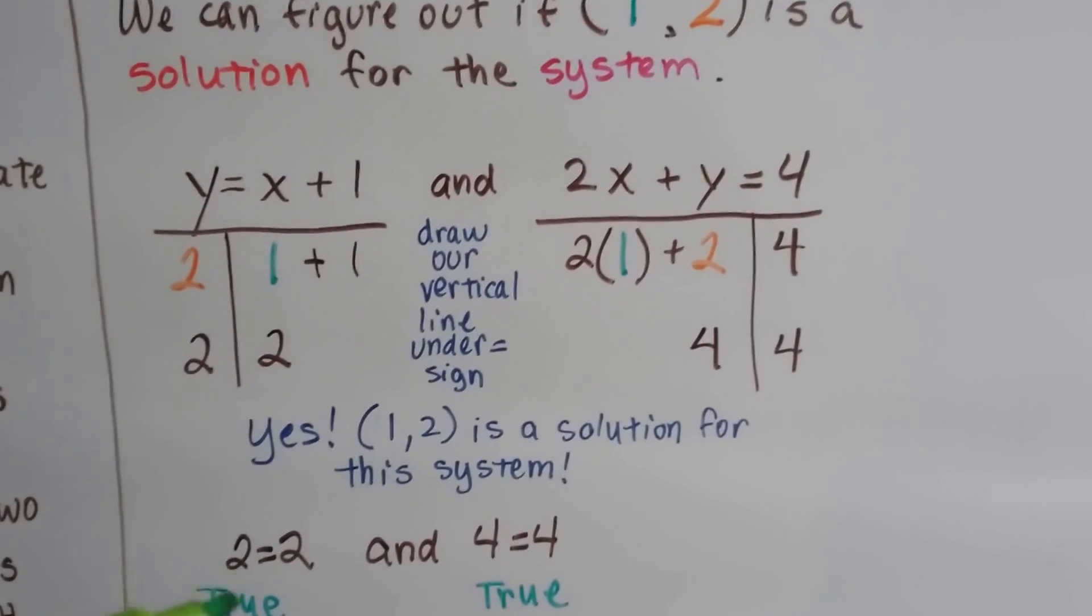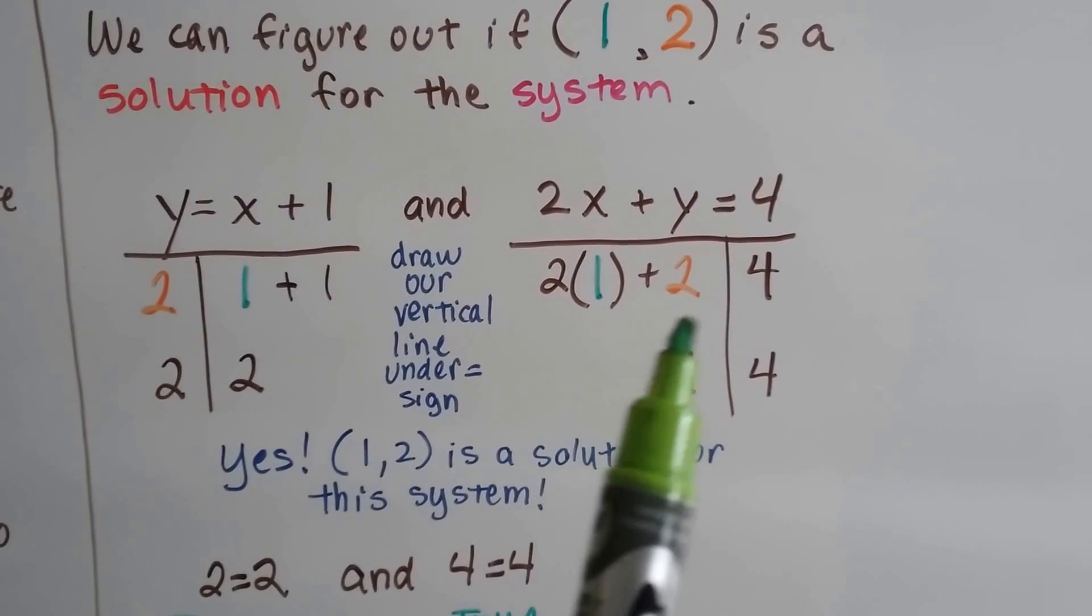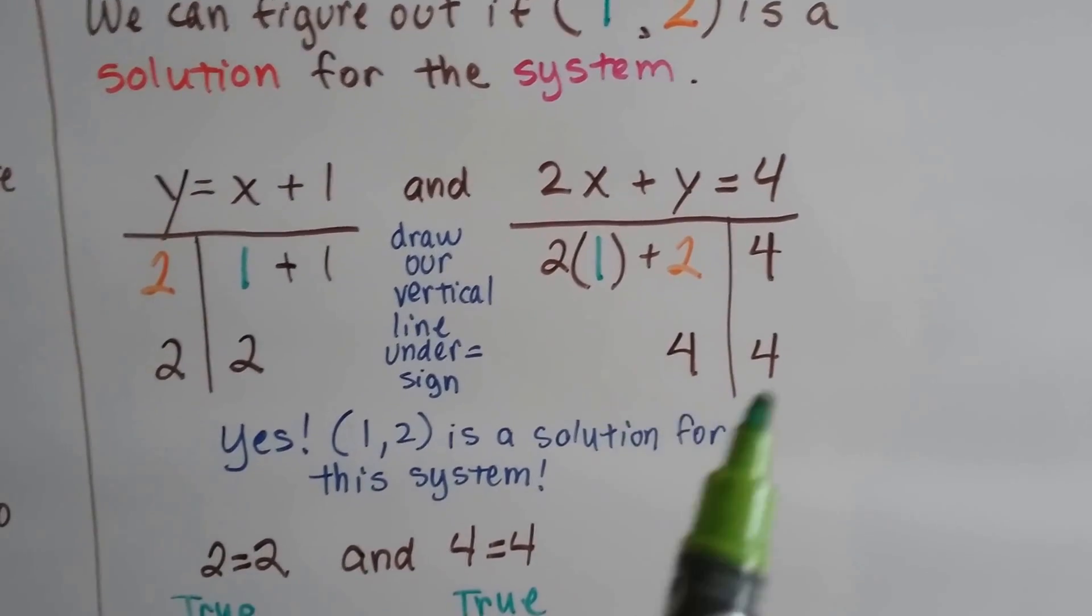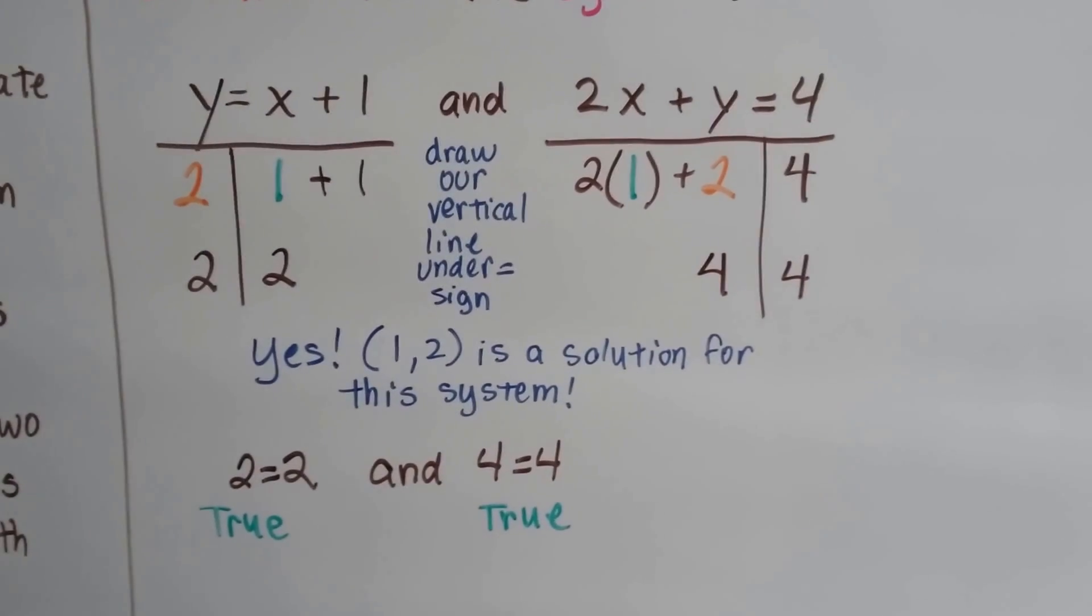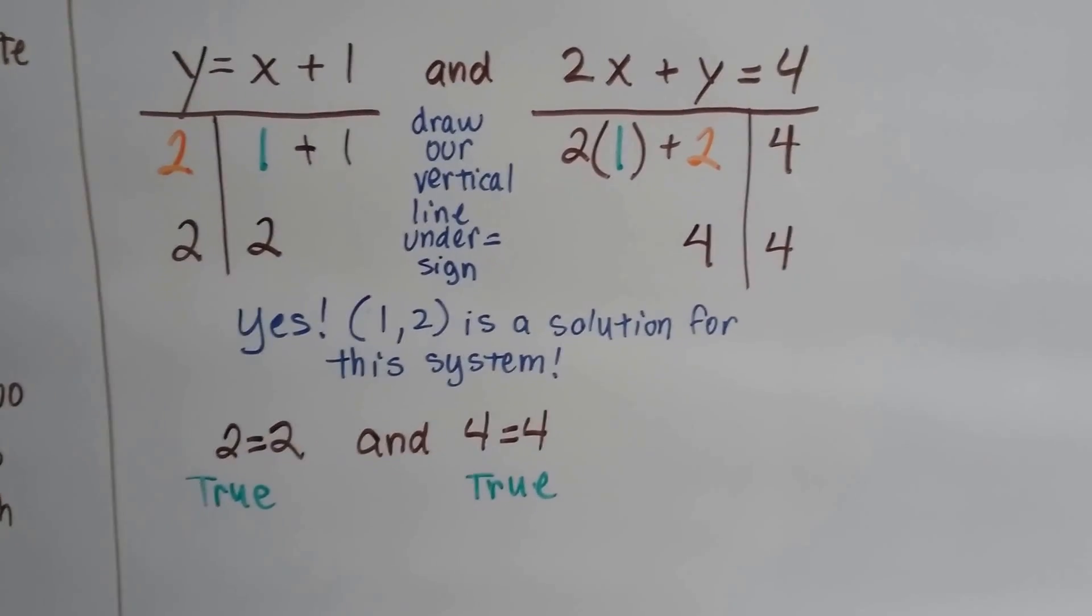And we get 2 equals 2. Yeah, that's true. And on this side, we plug in 1 for the x and 2 for the y, and we get 2 times 1 is 2, plus 2 is 4. Yeah, 4 equals 4. So yes, this ordered pair of 1, 2 is a solution for this system.